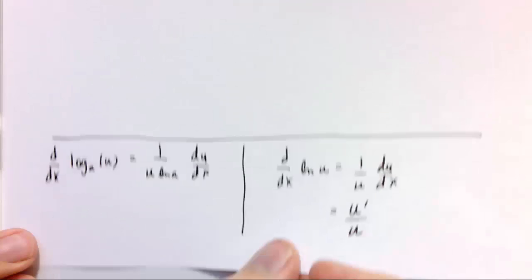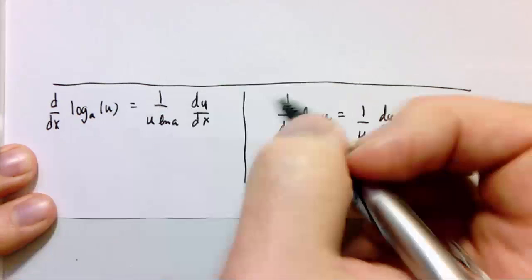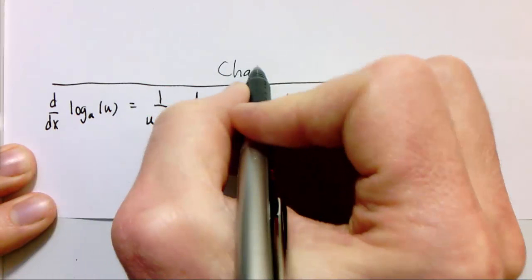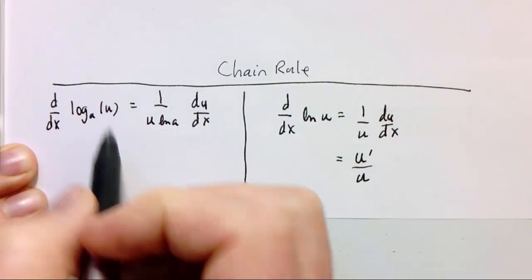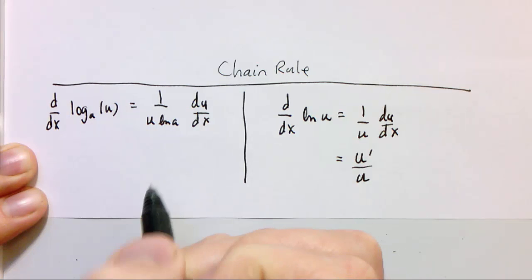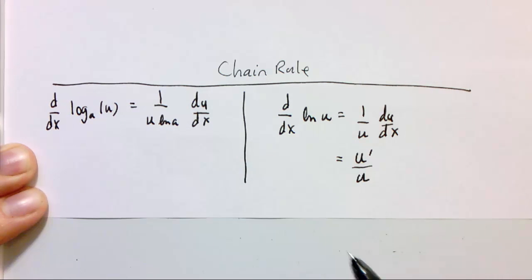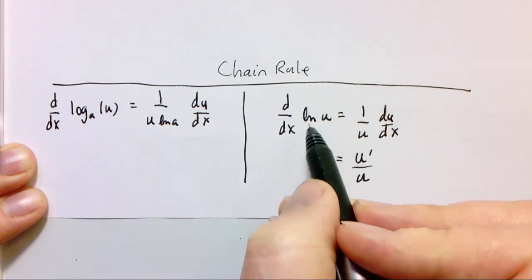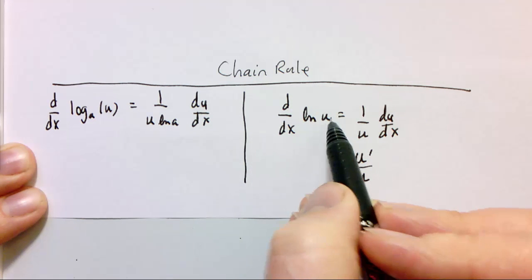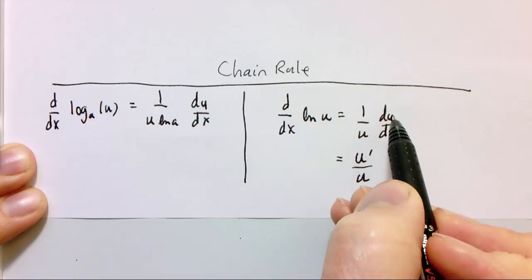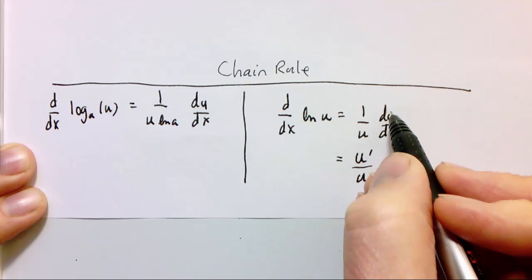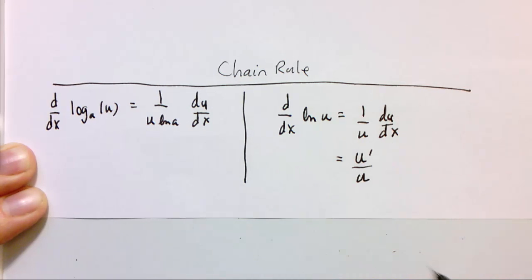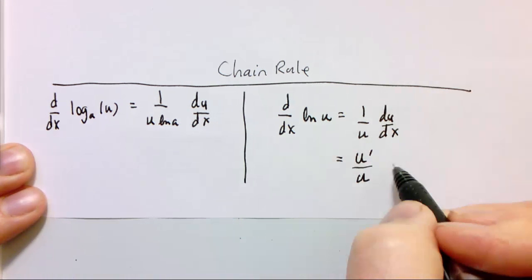Here we can write down the chain rule for logarithms as a summary. The derivative of log base a of some stuff u is 1 over u times the natural log of a times the derivative of the inside, du/dx. Or if we have the natural log of u, the derivative is u prime over u. Some people like to think of it in that last form.